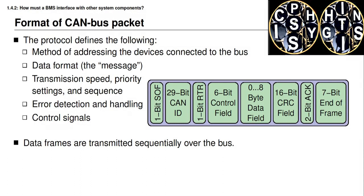The next field is a 2-bit acknowledgement field used to acknowledge correct receipt of a message. Finally, the message concludes with a 7-bit end-of-frame or EOF, which combined with the 1-bit start-of-frame puts bookends on the message so that the recipient knows the entire message has been received correctly.